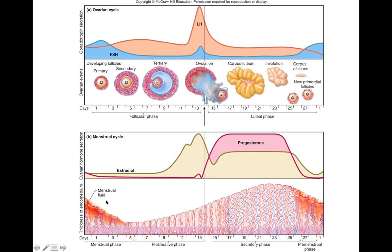While follicles are growing during the ovarian cycle, you finish up your menstrual cycle and start to proliferate the endometrium, making a nice thick home for a potential fertilized egg to implant. At ovulation, the endometrium is already quite thickened. It takes about another six or so days for a blastocyst — the fertilized egg after mitotic proliferation — to reach the uterus, putting implantation around day 21. The uterine lining is at its thickest during that time, thanks to progesterone released by the corpus luteum.